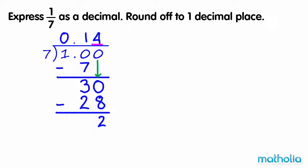So we round down. One seventh is approximately equal to zero point one.